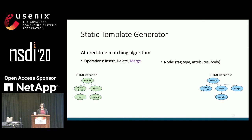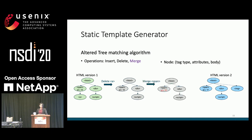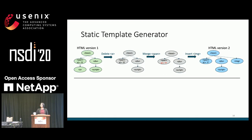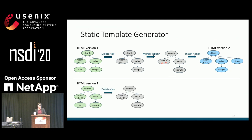As an example, given two HTML trees, the altered tree matching algorithm returns three operations: delete node A, merge the span node to update the id attribute, and insert the image tag — which yields the second tree. We generate the static template by starting with the first tree, applying delete operations to remove nodes not in the second tree, removing attributes and body content that are part of a merge operation since those differ between the two trees, and ignoring insert operations since those represent content not in the first tree.